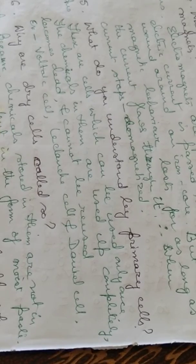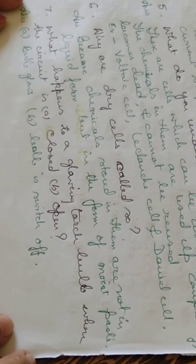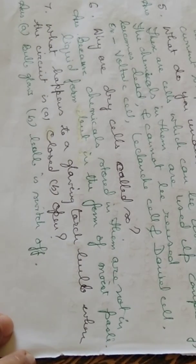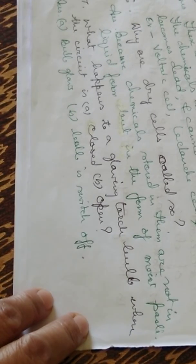What do you understand by primary cells? Primary cells are those which can be used only once because the chemicals in them are used up completely when they are used and they cannot be reused. They are dead. For example, Voltaic cell, Leclanche cell, Daniel cell. Why are dry cells called so? Because the chemicals stored in them are not in liquid form, they are in the form of moist paste. They will not spill any liquid out of it. What happens to a glowing torch bulb when the circuit is closed or open? When the circuit is closed, the bulb will glow. When the circuit is open, the bulb will not glow.